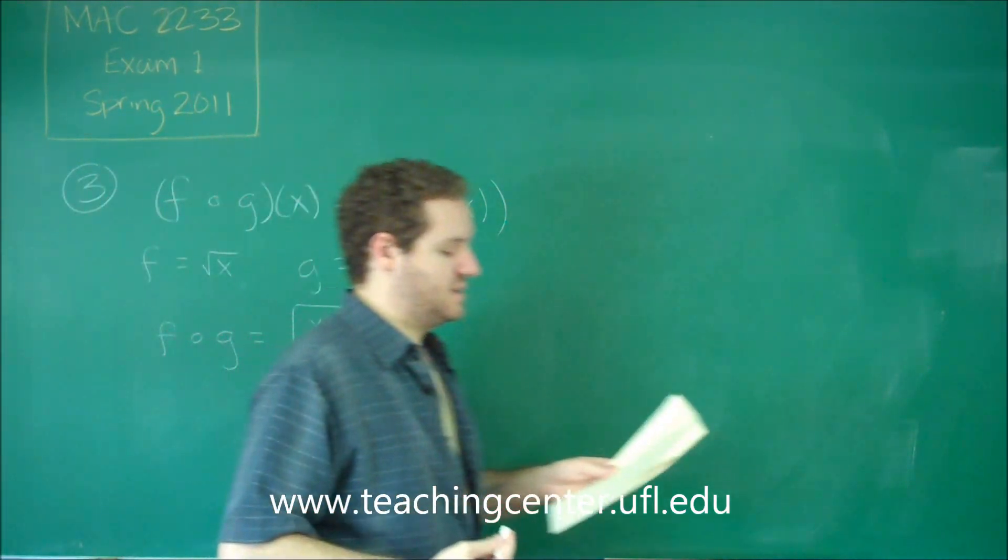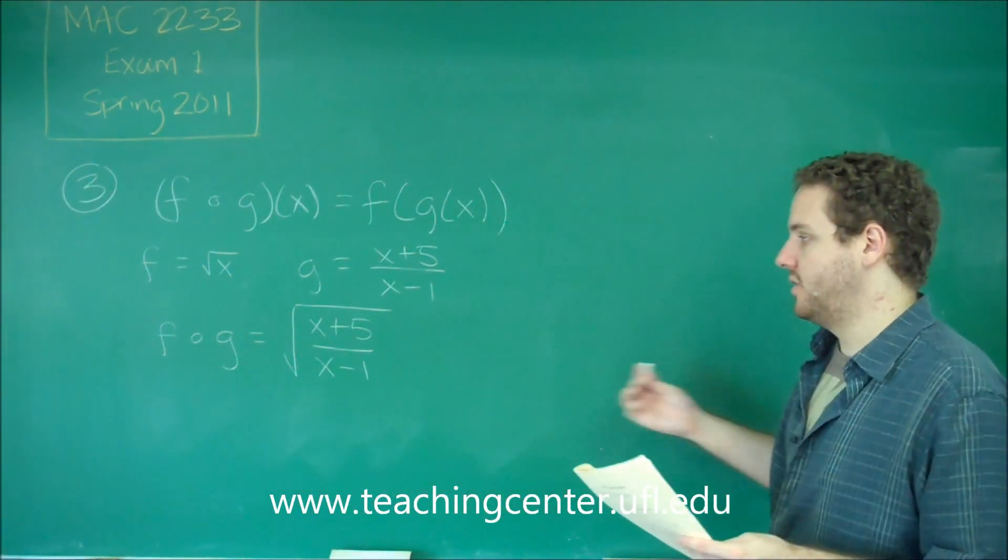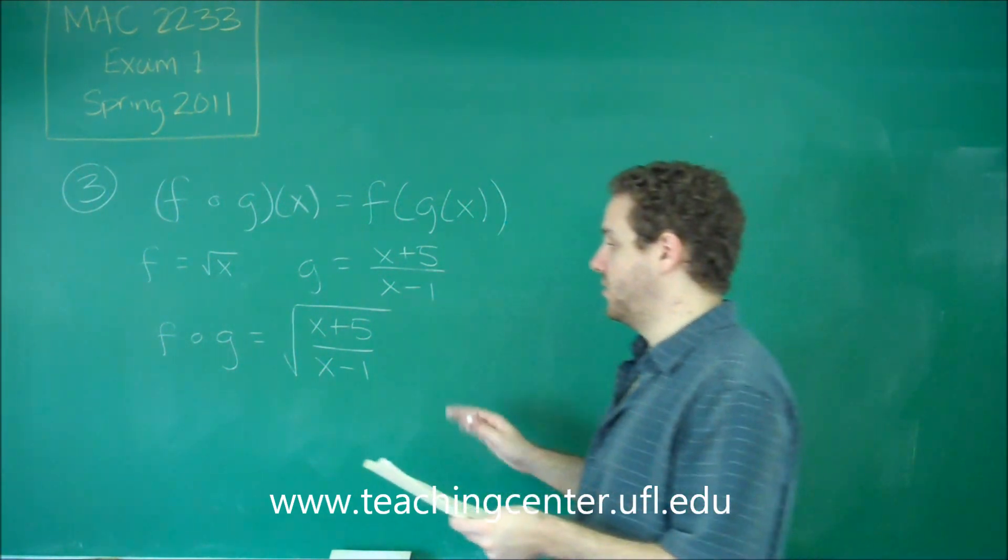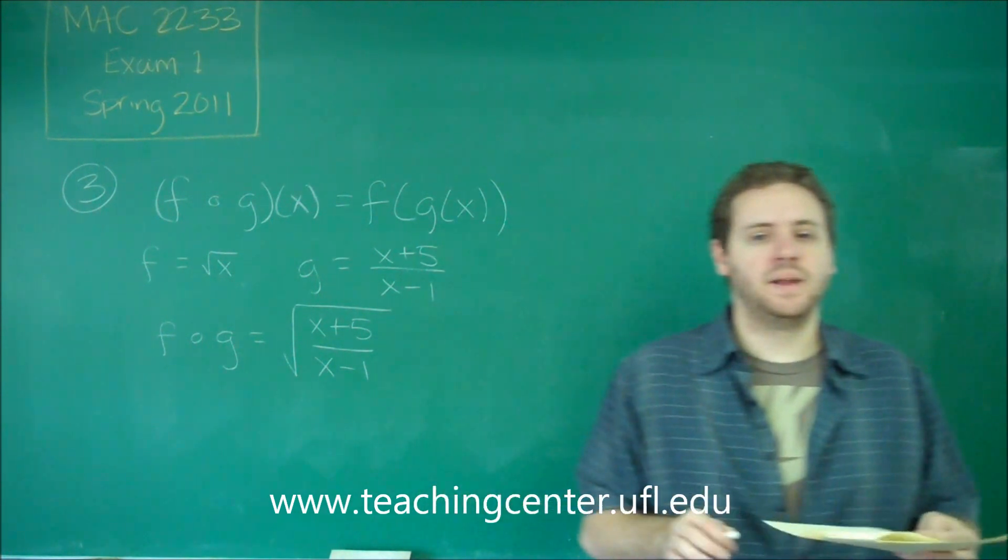So we want to find this and its domain. Just from that you can get rid of a lot of answer choices here. a, b, and e all have the incorrect function.